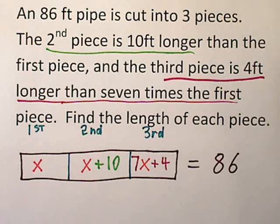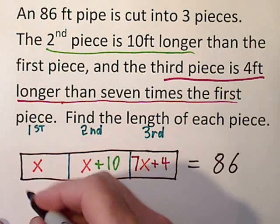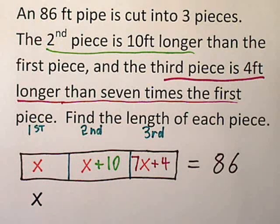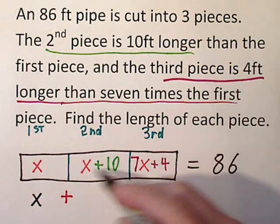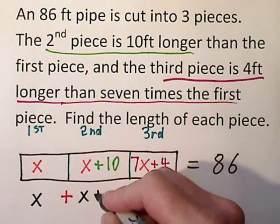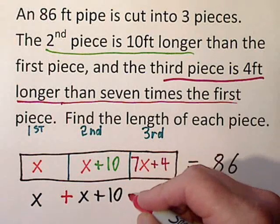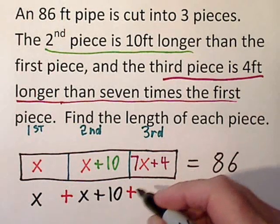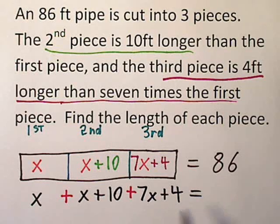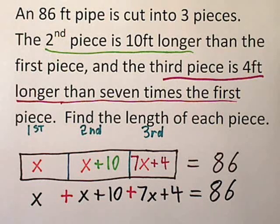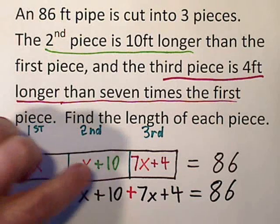So now we've described each piece, and if we take the first piece, which is x, add that to the second piece, which is x plus 10, and then add that to the third piece, which is 7x plus 4. If we add these three pieces up, we're supposed to get 86. Now we have our algebraic equation. We go ahead and solve for x, and then we'll take the answer we get and plug it back in wherever there is an x.